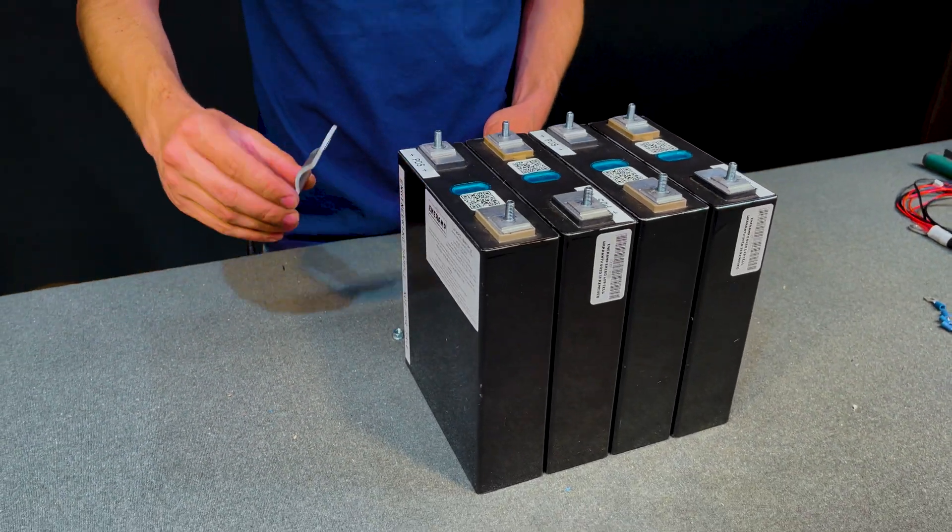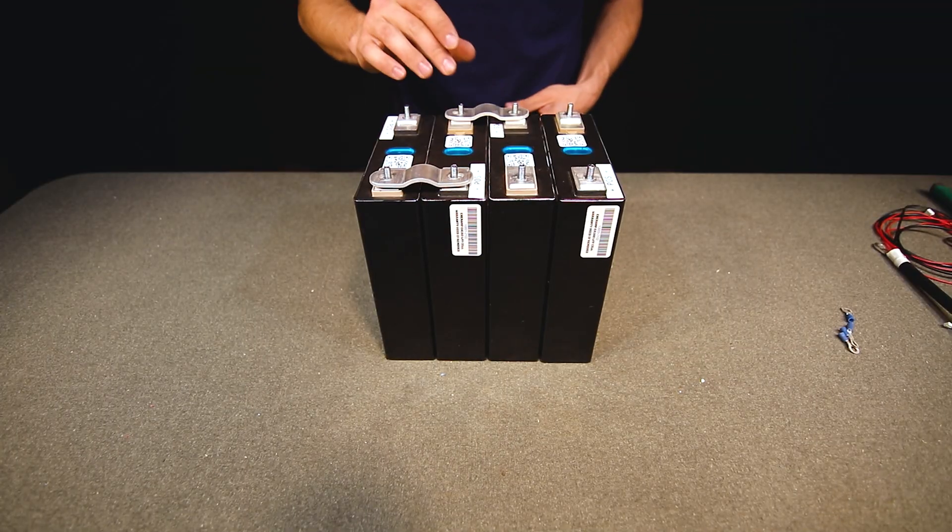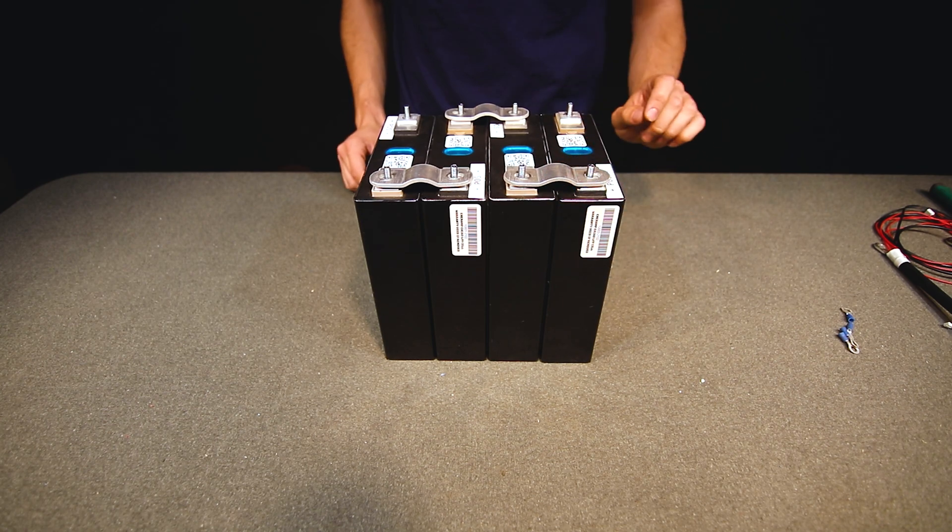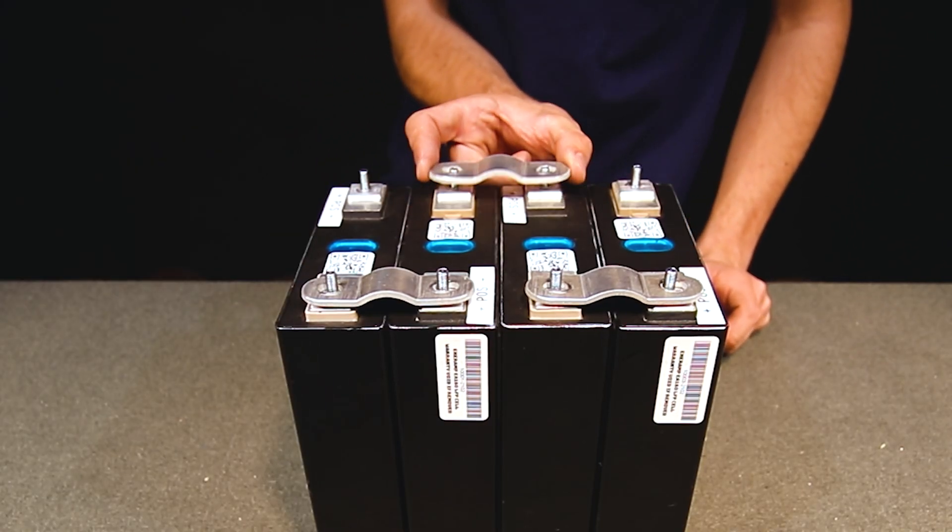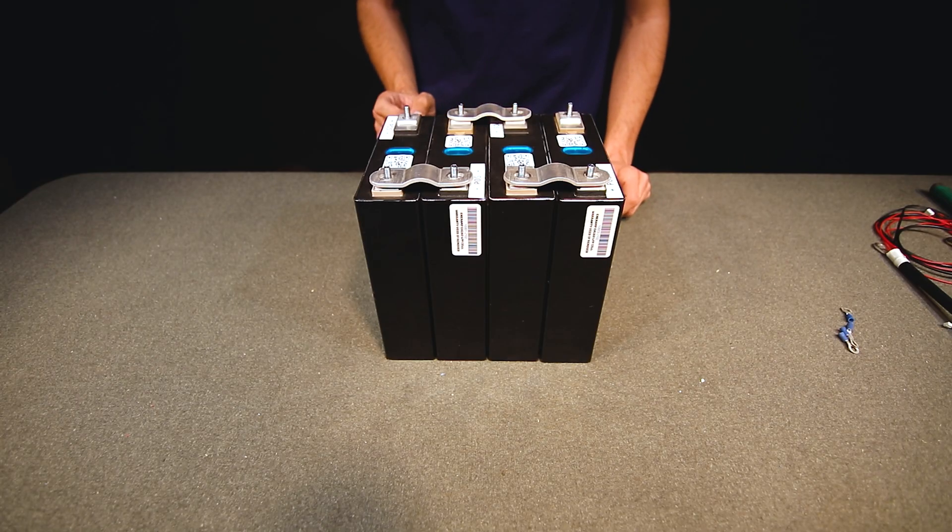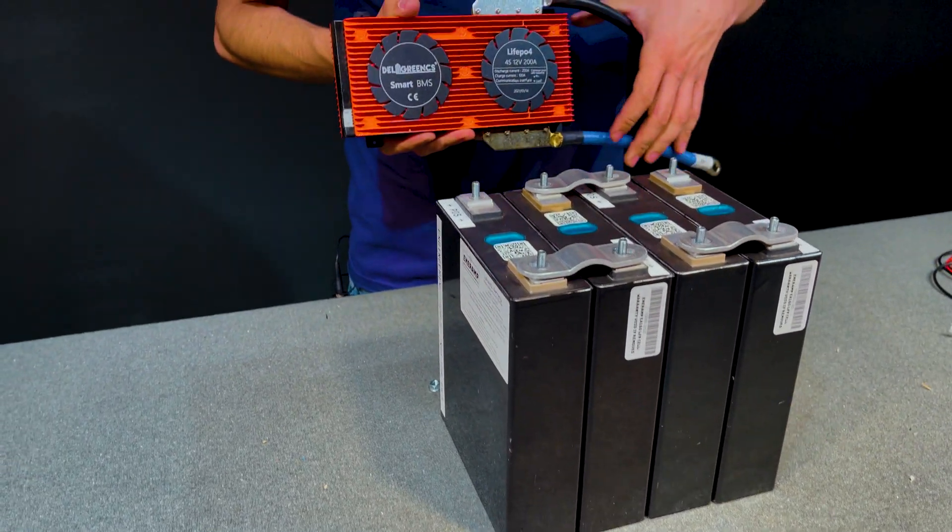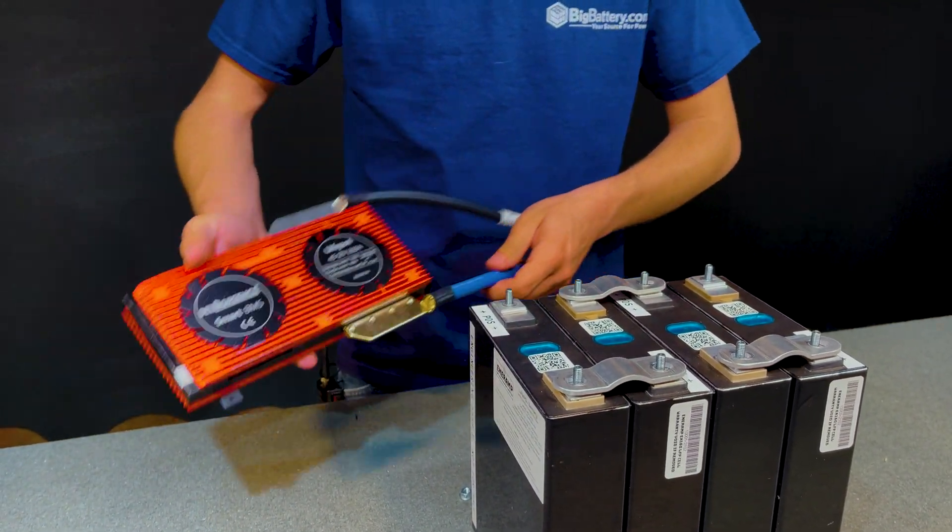Now paying attention to what we're doing we're going to install the three bus bars for a 12 volt configuration. Now pay extra attention when you're doing this. If I were to move this bar over one place it would create a dead short and blow up in my face. We may think we're ready to put the nuts on but we aren't. We need to get the BMS ready to go.